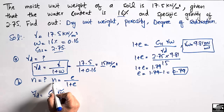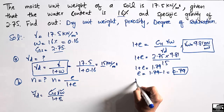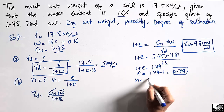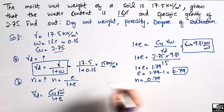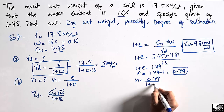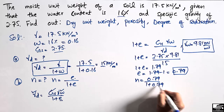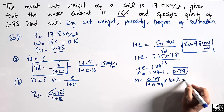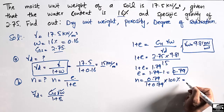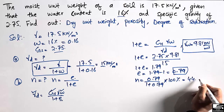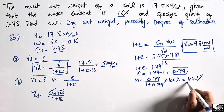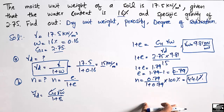Now putting this E value into the porosity equation: N equals E divided by (1 plus E), so N equals 0.79 divided by (1 plus 0.79), multiplied by 100%. This comes out to be 44.1%. So the porosity present in this soil sample is 44.1%.